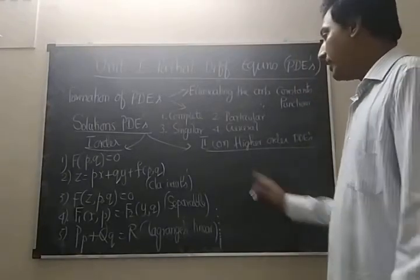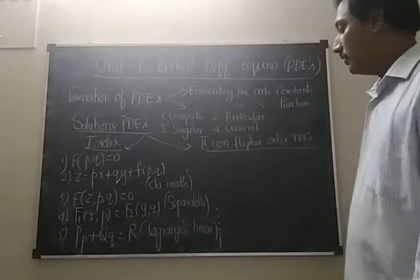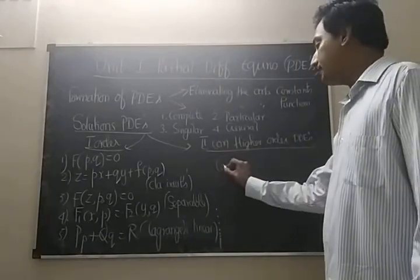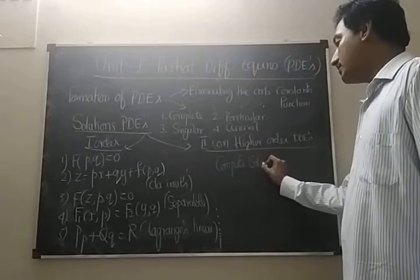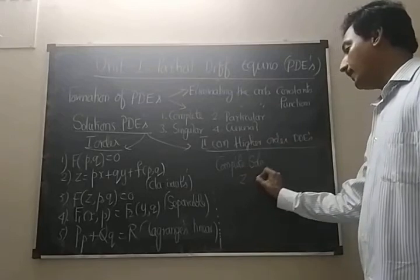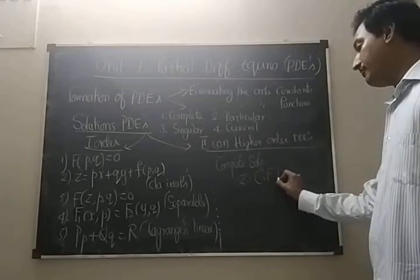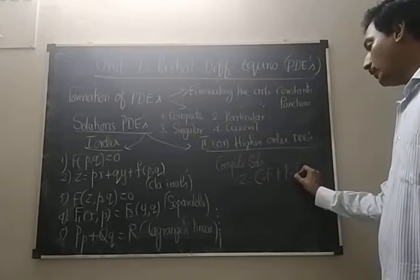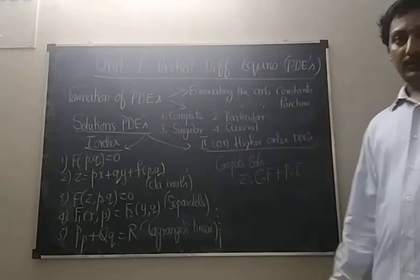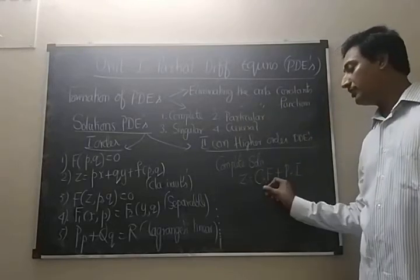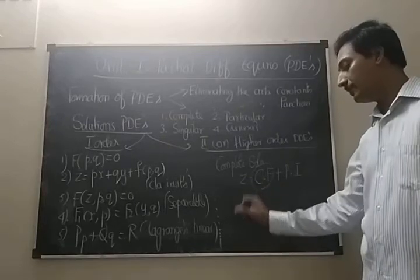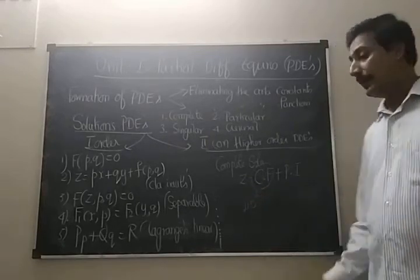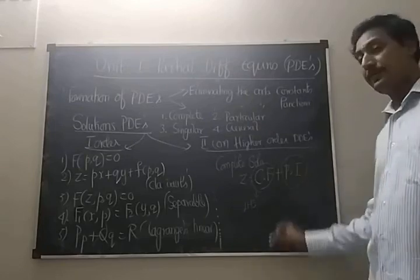The second or higher order PDEs: the complete solution consisting of two parts, what is called the complementary function CF and the second one is particular integral, PI. The complementary function depends upon the given left hand side relation.